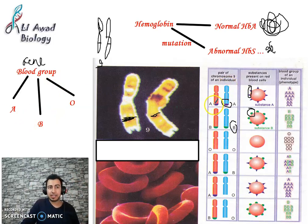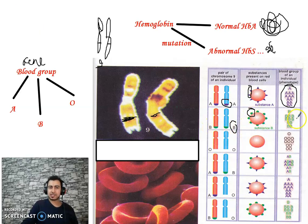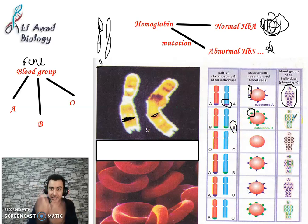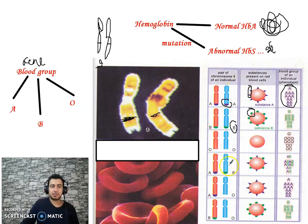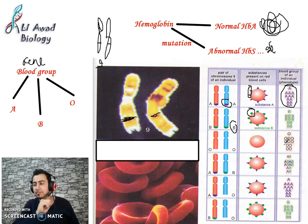The gene of the blood group has three alleles: form A, form B, and form O. A person carries two alleles — one from the father and one from the mother. If carrying A from both parents → blood group A. If B from both → blood group B. If O from both → no substance produced → blood group O.